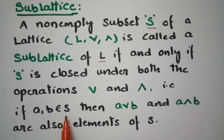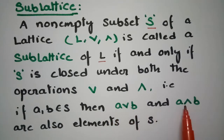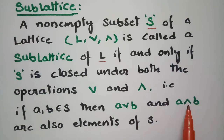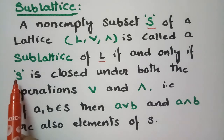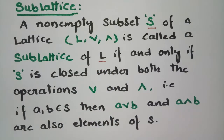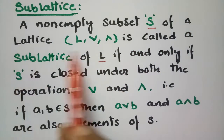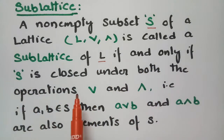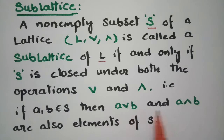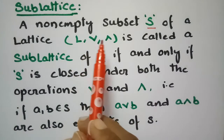That is, if A, B belong to S, then A join B and A meet B are also elements of S. After operating join and meet, the elements should still belong to the set S, then S is said to be a sublattice of this main lattice. So S is closed under both the operations join and meet — that is, if A, B belong to S then A join B and A meet B are also elements of S, and S is called the sublattice of the main lattice L.